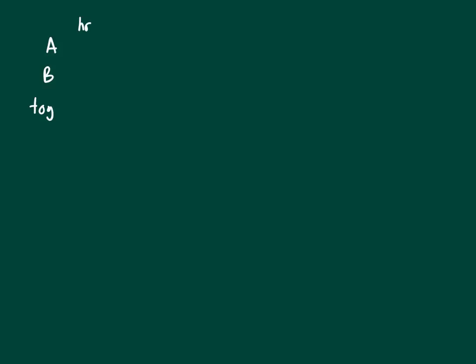A, B, and C operate at respective constant rates. So pump A and B, pump A and B together. Let's do hours and rate. So machine A has rate little a, and machine B is little b. They can fill a certain tank in six-fifths hours. So that's six-fifths, but you take the reciprocal of that for the rate, and that's five-sixths. So we know that A plus B equals five-sixths.